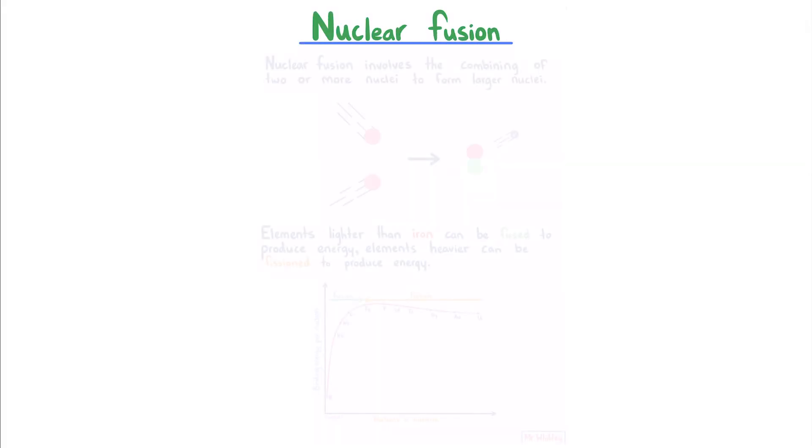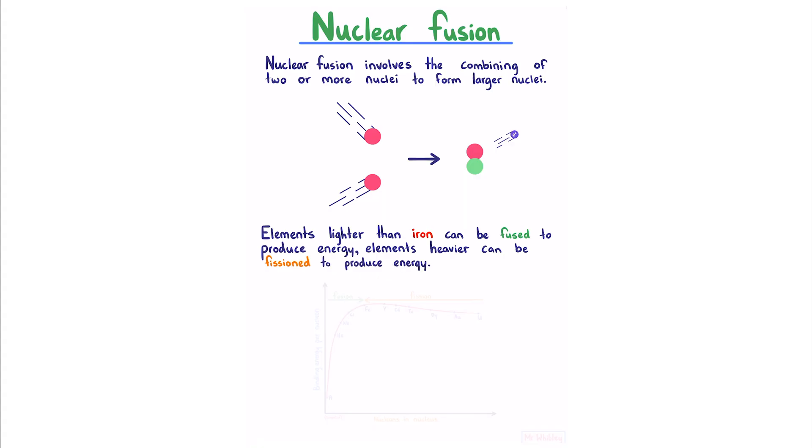Nuclear fusion: Nuclear fusion involves the combining of two or more nuclei to form a larger nuclei. Here is one of many examples. Elements lighter than iron can be fused to produce energy. Elements heavier can be fissioned to produce energy. This relationship is described on this graph here, which you'll cover in depth at Level 3.